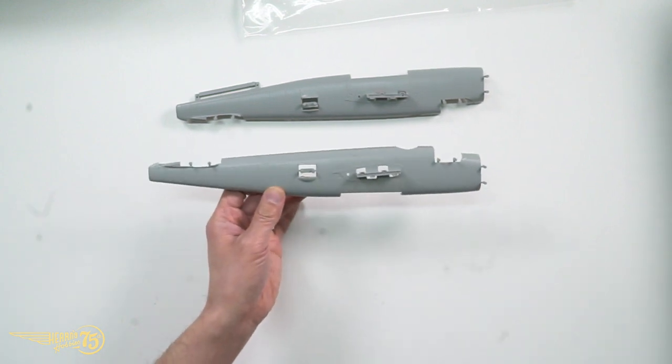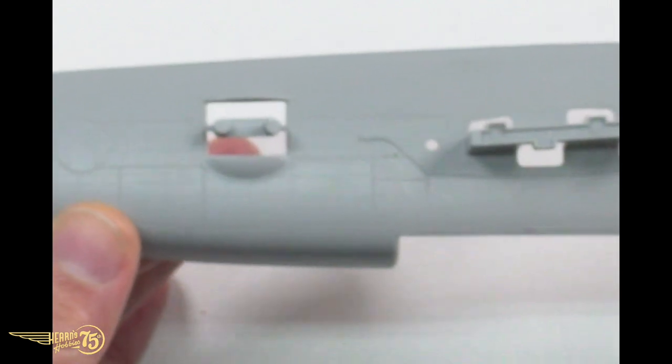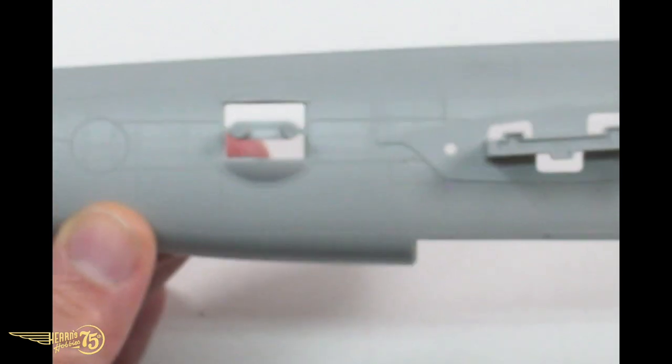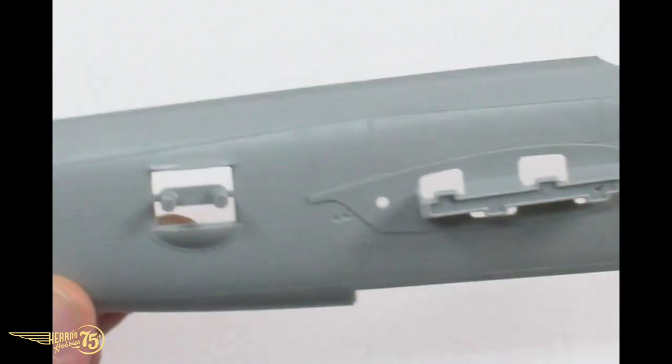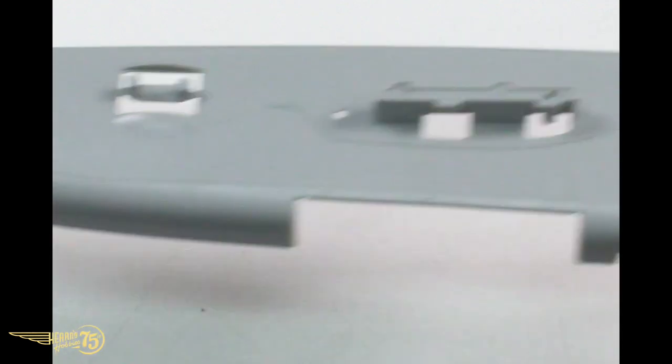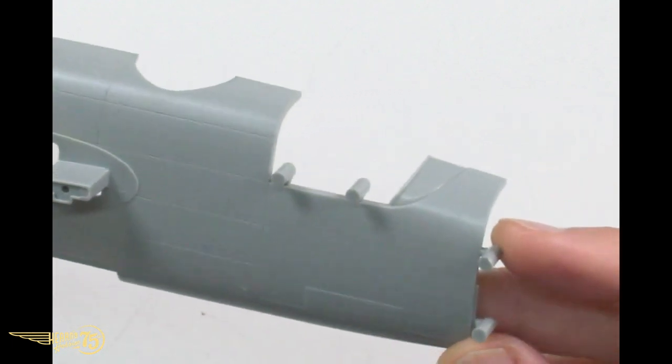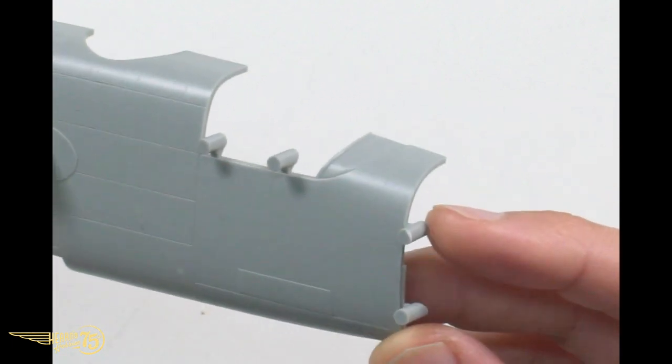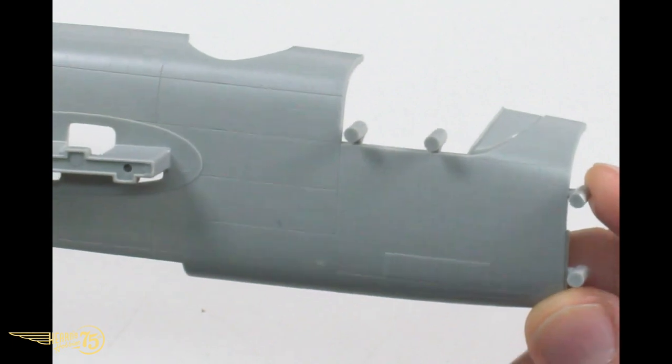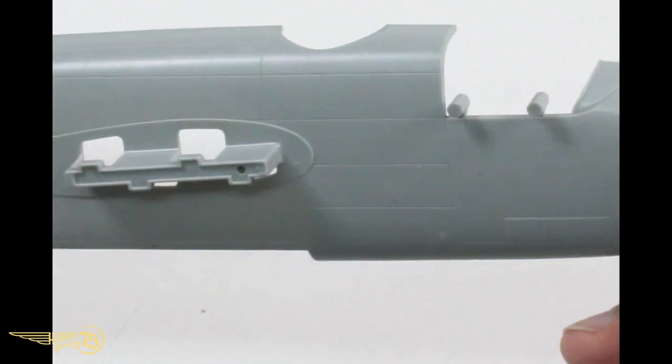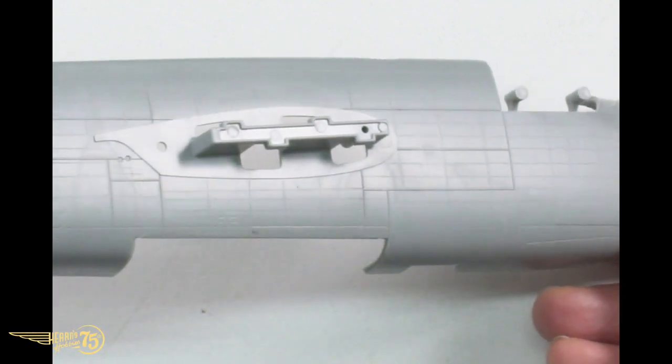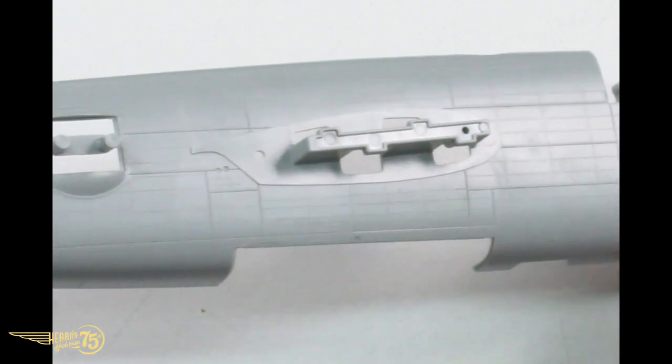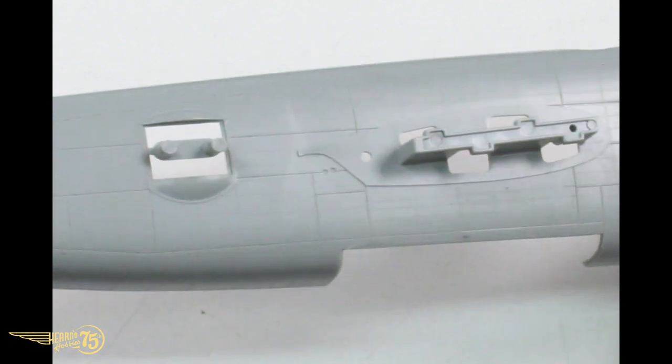Now the B-25 was made really famous by the Doolittle Raid. So if you're not sure about that, you'll probably get all the finer details if you look it up on Google. That's when the U.S. attacked Tokyo after the raids on Hawaii and Pearl Harbor. And it was a real morale booster for the U.S., and it was a real demoralizer for the Japanese who thought they were untouchable at the time.